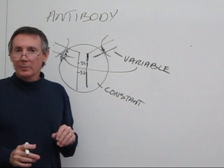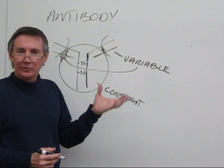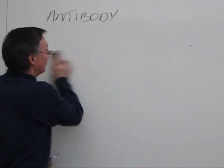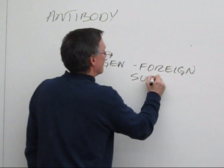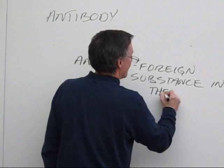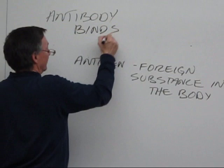Now, a given antibody like this has those two variable binding areas. They're the same in one antibody, and they bind to some substance that's foreign, that's not normally found in the body. We call a foreign substance like that an antigen. And that's the job of an antibody. An antibody binds to an antigen.